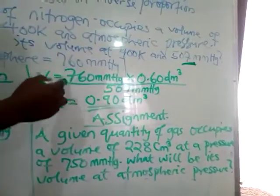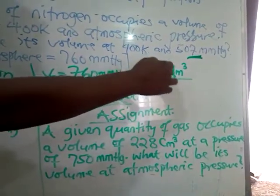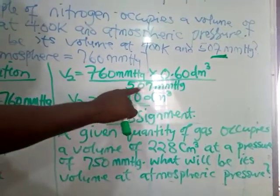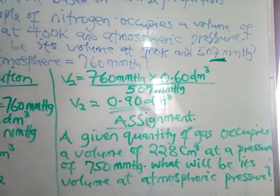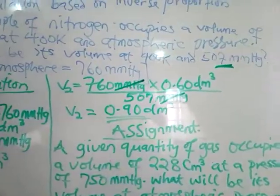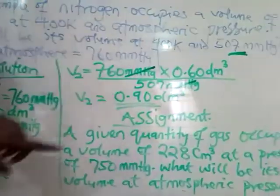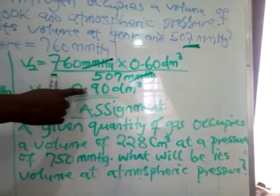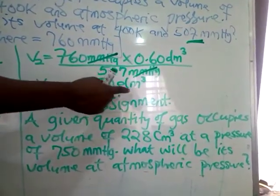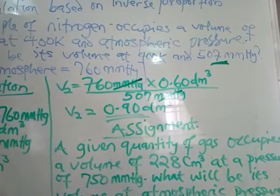So we have: V2 = (760 mmHg × 0.60 dm³) / 507 mmHg. The millimeter mercury units cancel, and when you multiply 760 by 0.60 dm³ you get 456, divided by 507 gives approximately 0.899, which rounds to 0.90 dm³. This is your final answer — the final volume V2 = 0.90 dm³.